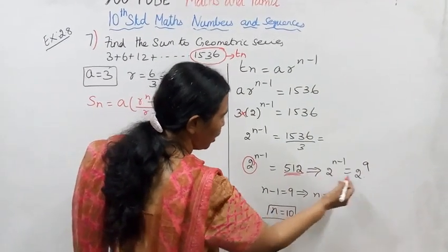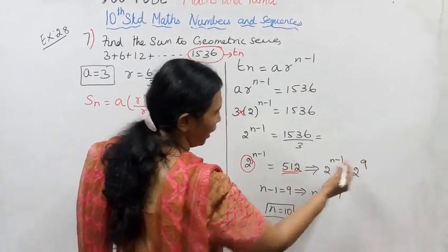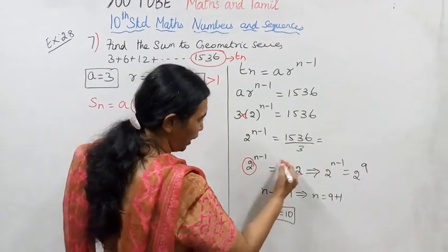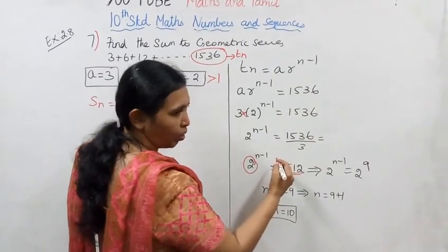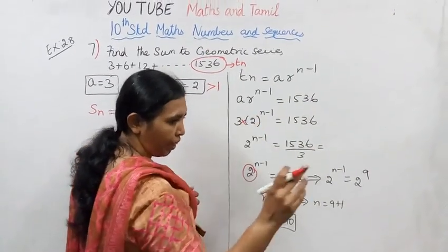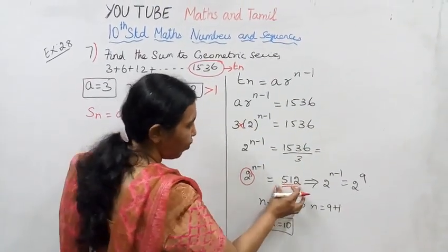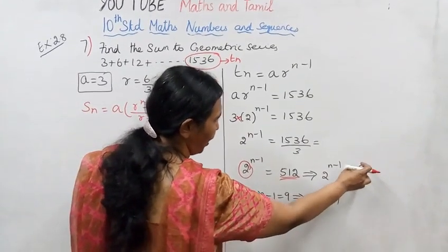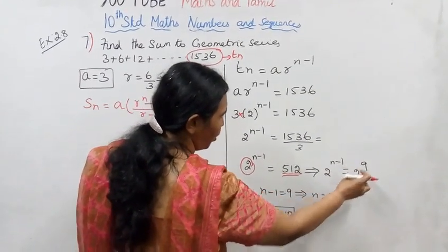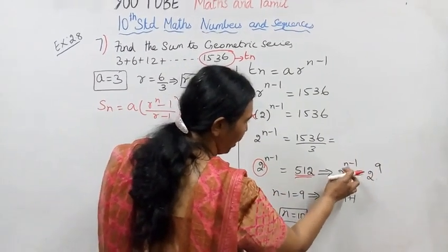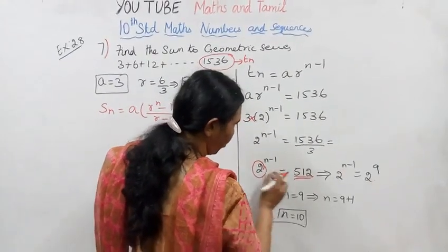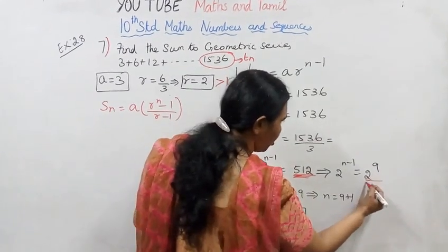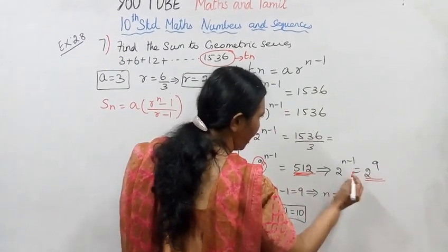512 is expressed as 2 power 9. Prime factorization of 512 gives us 2^9. So we have 2^(n-1) equals 512, which equals 2^9.